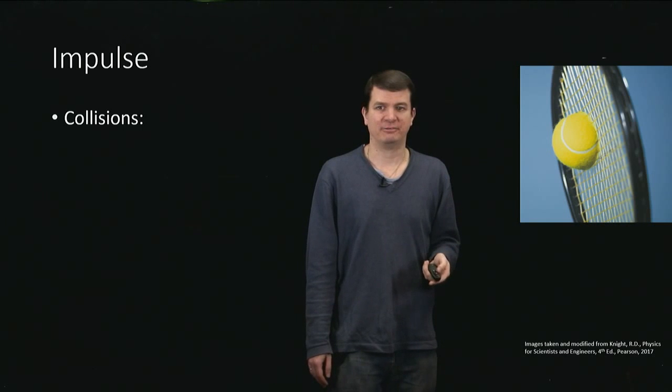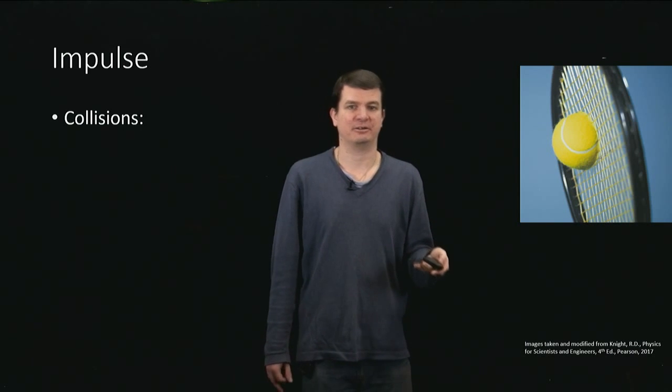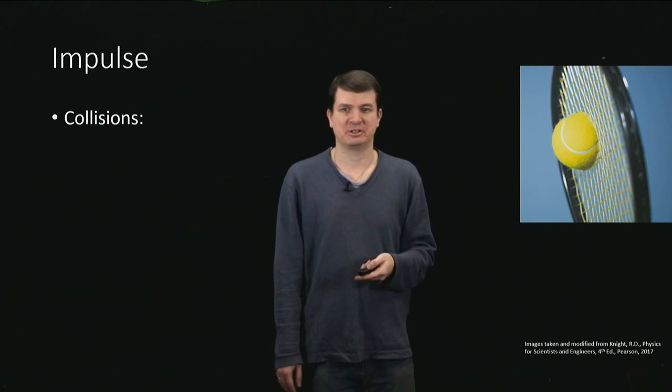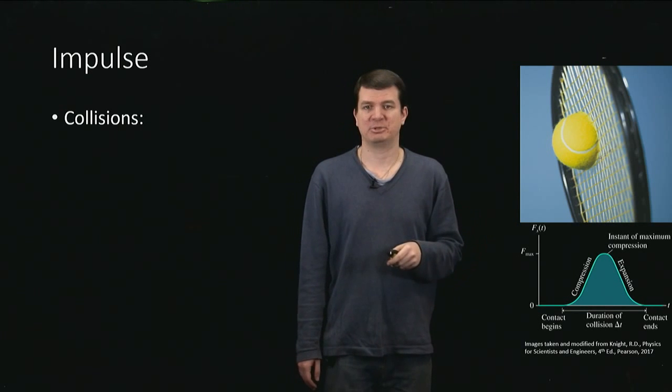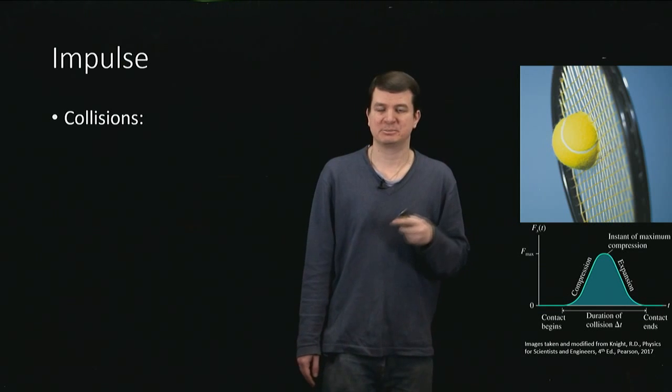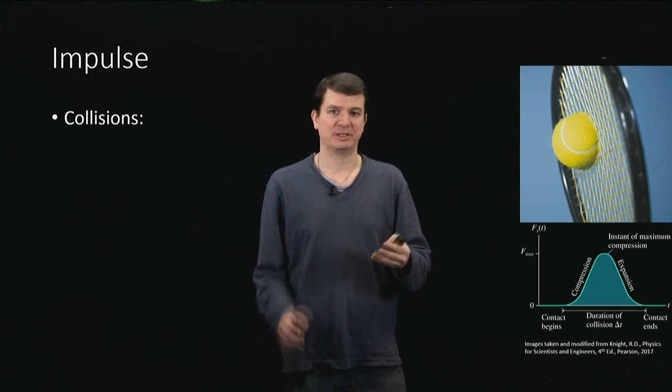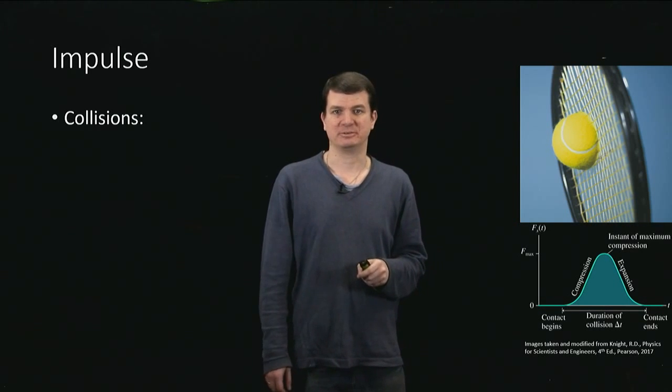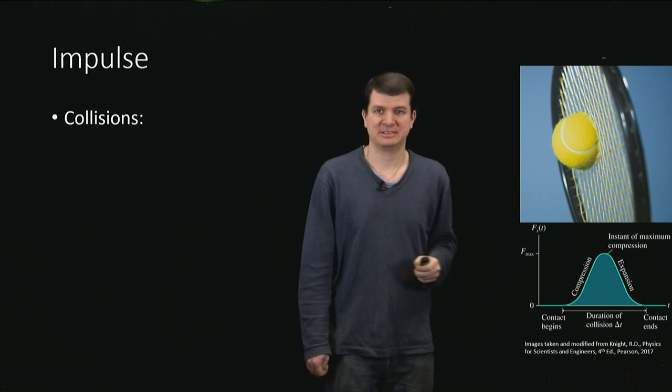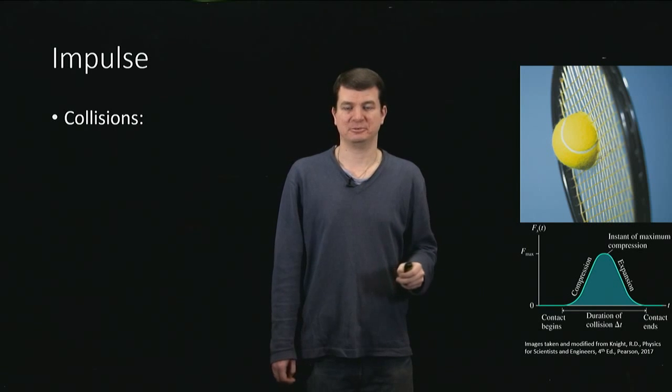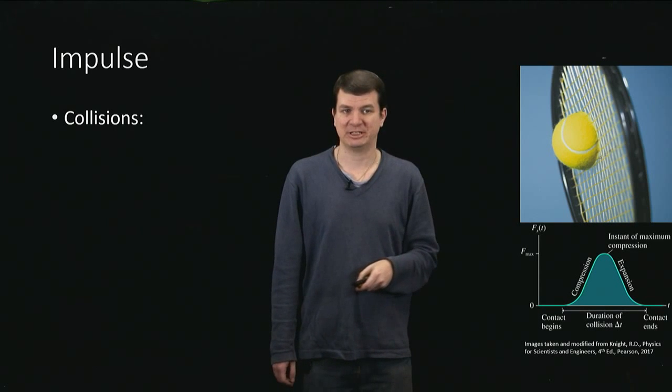So if we were to graph the force exerted by the racket on the ball or by the ball on the racket as a function of time, we would get something like this, where it rises as the ball becomes compressed, hits a maximum once the ball is fully compressed and basically all of it being brought to a stop, and then falls off as the tennis ball expands, moving off in its new direction after having been hit.